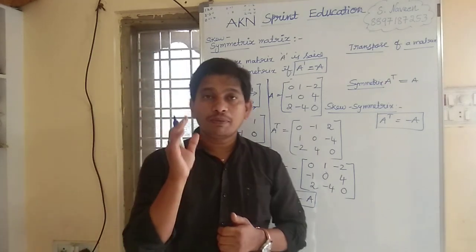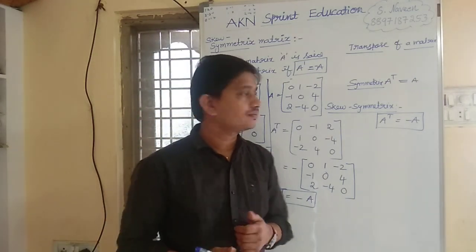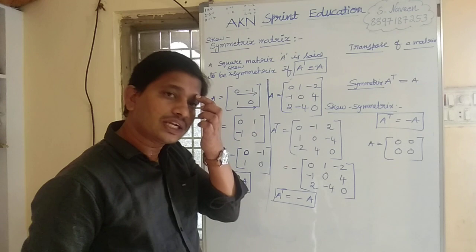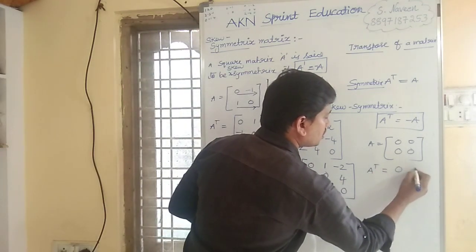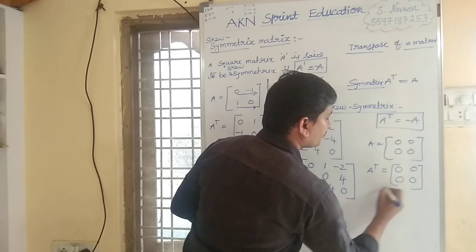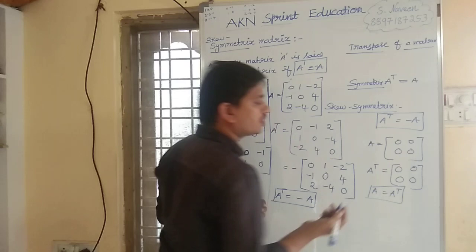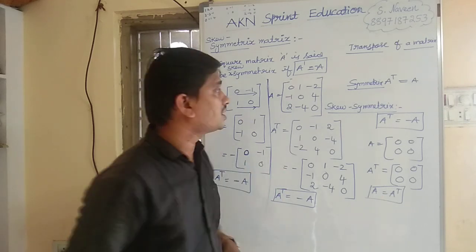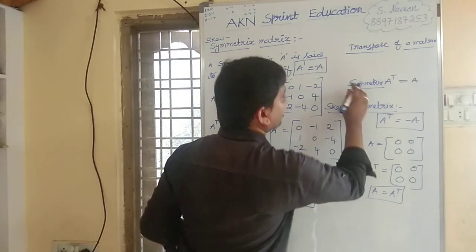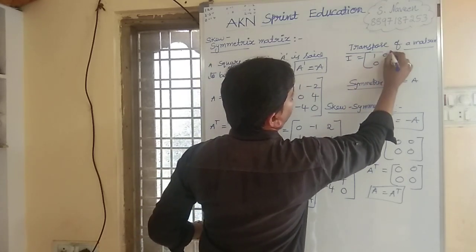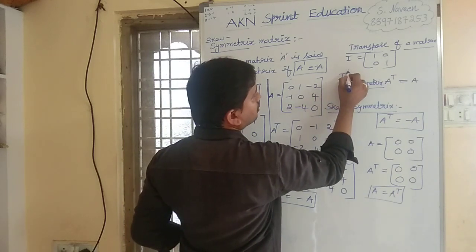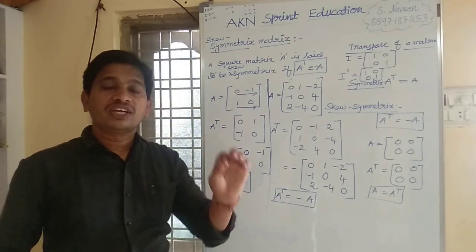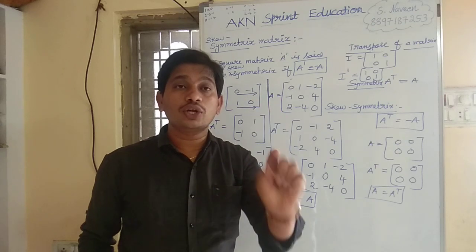Consider the zero matrix: A equals 0, 0, 0, 0. A transpose is also 0, 0, 0, 0. So A equals A transpose, meaning the zero matrix is a symmetric matrix. Similarly, the identity matrix I equals 1, 0, 0, 1 and its transpose is also 1, 0, 0, 1. So both zero matrix and identity matrix are symmetric matrices.